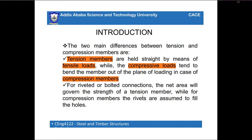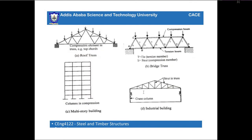The two main differences between tension and compression members are: tension members are held straight by means of tensile loads, while in compression members the compressive load tends to bend the member out of the plane of loading. Examples of compression members include roof trusses, bridge trusses, industrial buildings, and multi-story buildings.